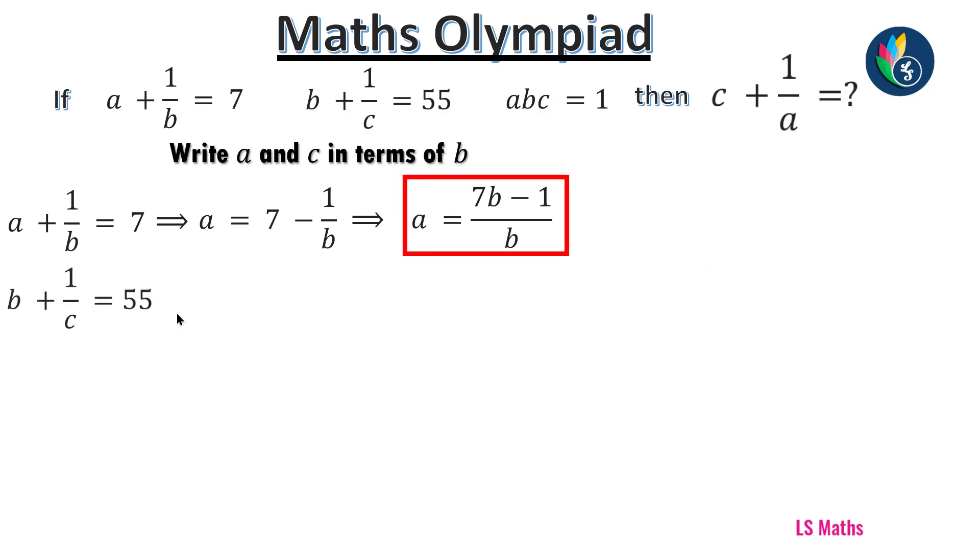Next step, B plus 1 by C equals 55. This implies 1 by C equals 55 minus B. But we want C, so I put the reciprocal. This implies C equals 1 by 55 minus B. Again, we put one box.